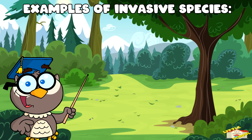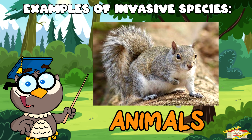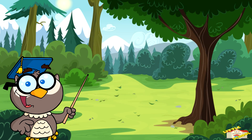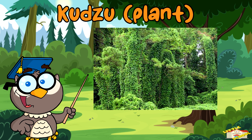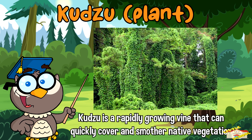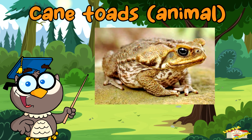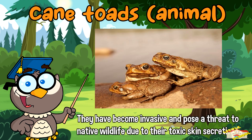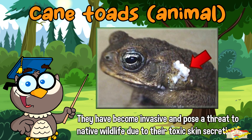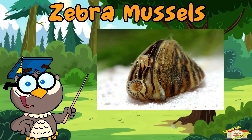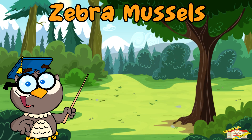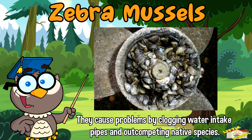Examples of invasive species include plants, animals, fungi, and fish. Let's go over some well-known examples. Kudzu is a rapidly growing vine that can quickly cover and smother native vegetation. Cane toads were introduced to control agricultural pests but have become invasive and pose a threat to native wildlife due to their toxic skin secretions. Zebra mussels, native to eastern Europe, have invaded water bodies in North America and Europe, causing problems by clogging water intake pipes and outcompeting native species.